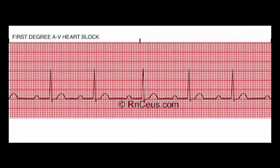Here is a blown-up picture of the first degree AV block. This looks like an otherwise normal sinus rhythm — we have a nice R-to-R interval, a nice P-to-P interval, an upright rounded T-wave, and our QRS complex is within normal duration. The one abnormality is the PR interval, which normally should be between 0.12 and 0.20 seconds. Here it is very prolonged throughout the entire EKG with no fluctuation. If my PR interval is greater than 0.20 seconds throughout the EKG, I can call that a first degree heart block. Diagnose it as a sinus rhythm with a first degree AV block.